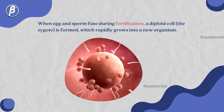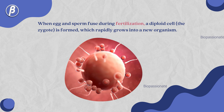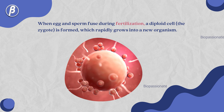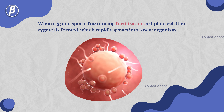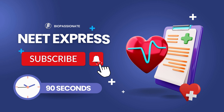When egg and sperm fuse during fertilization, a diploid cell called zygote is formed, which rapidly grows into a new organism.